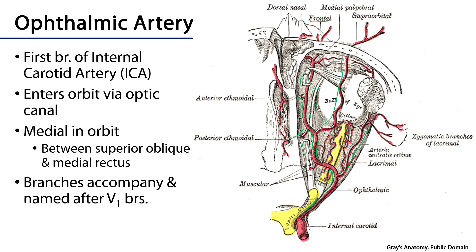The ophthalmic artery will supply the orbit, the eye, the ethmoidal sinuses, the nasal cavity, and the skin of the forehead and surrounding the orbit.